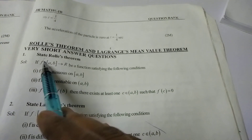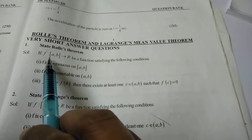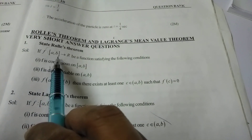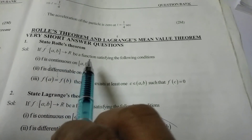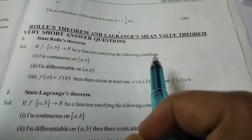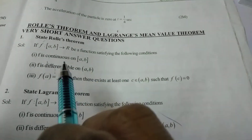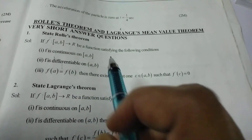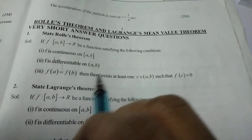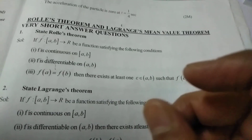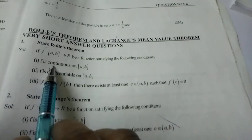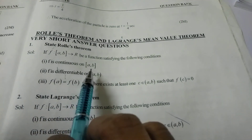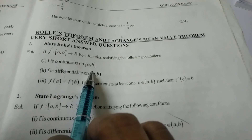Now, state Rolle's Theorem. Let f from [a, b] to ℝ be a function satisfying the following conditions. There are three conditions to satisfy for it to be called Rolle's Theorem. First condition: f is continuous on the closed bracket [a, b].